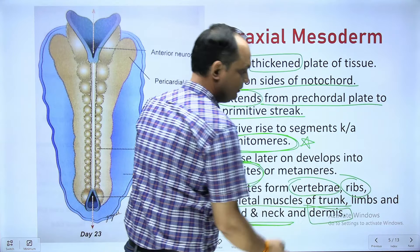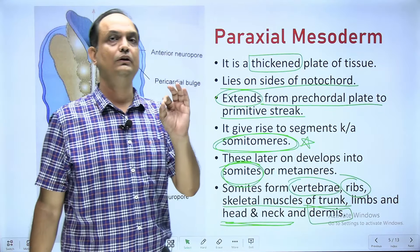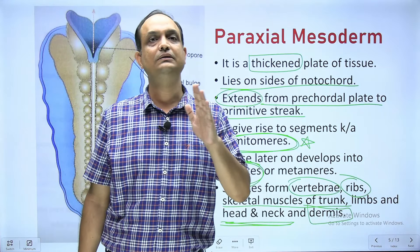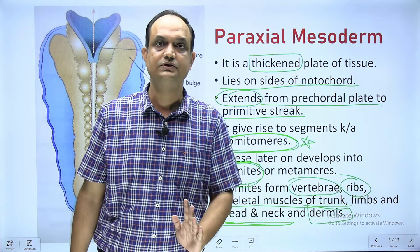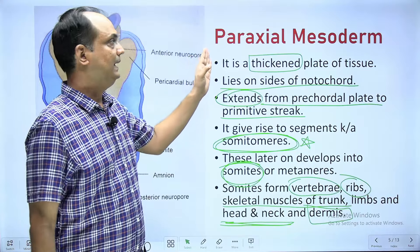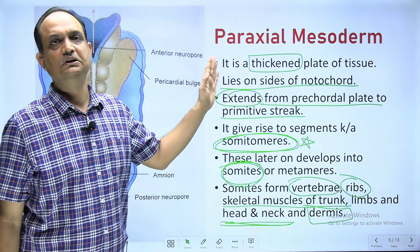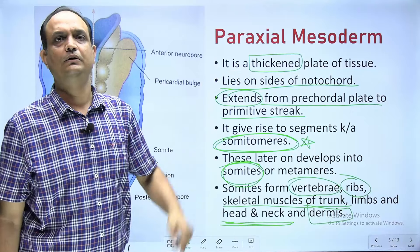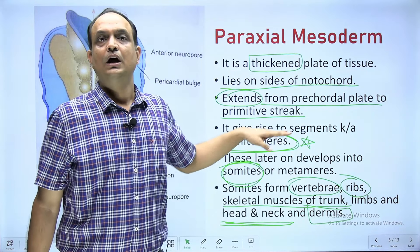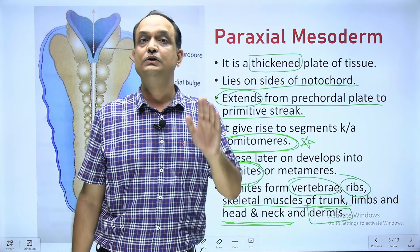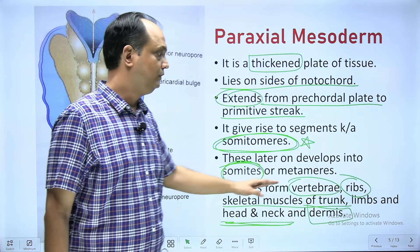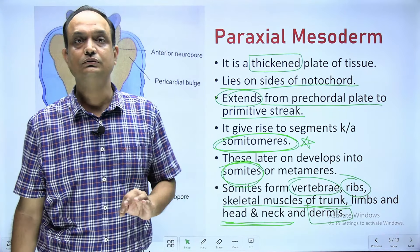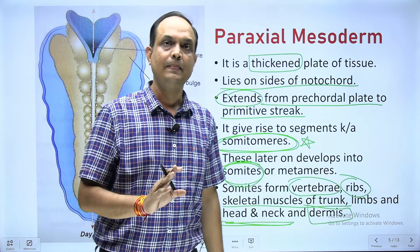Through the somites, the para axial mesoderm forms vertebrae, ribs, skeletal muscles of the trunk, muscles of the limbs, muscles of the head and neck, and the dermis part of the skin. To summarize: the intra embryonic mesoderm arises from epiblast cells migrating through the primitive streak; it is divided into para axial, intermediate, and lateral plate; para axial is thickest, lying on both sides of the notochord from the pre-chordal plate to the primitive streak, forming somatomeres, then somites.